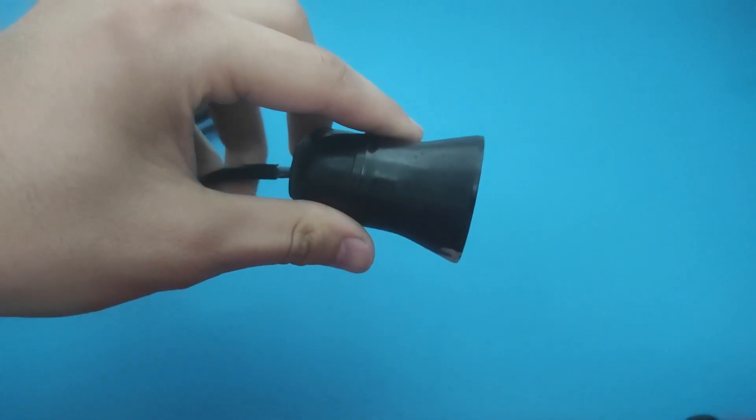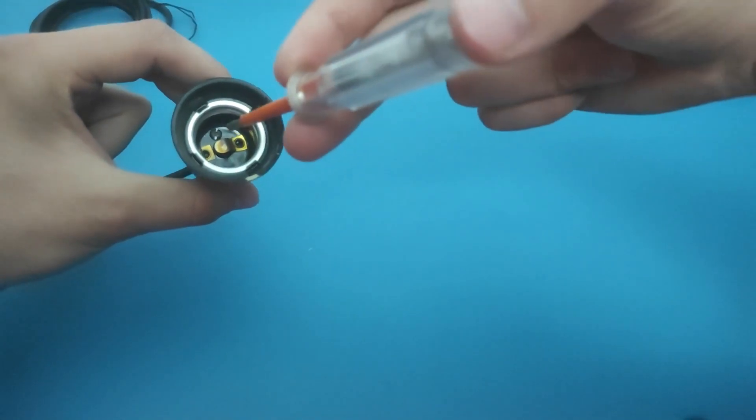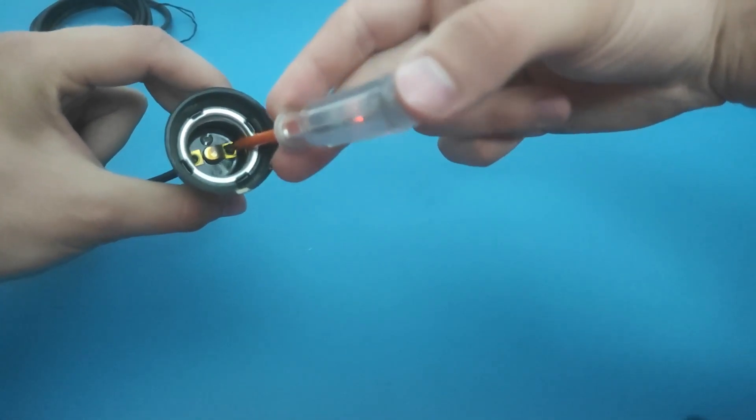And finally, I'll show you how you can find a hot wire in a light socket. Take a voltage tester and find the metal contact where the phase is connected.